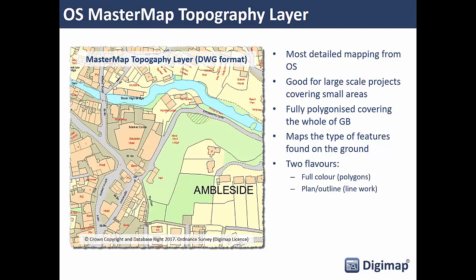This data is available in two versions which you can view in Roam and download through data download. One is a full color version. The other is what we call plan or outline style — more of a linework style with no polygon fills, just the outlines of features. Buildings are drawn with a red outline; other things have a black outline.